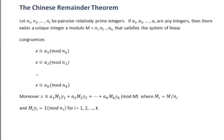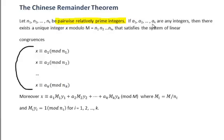Today we're going to learn how to use the Chinese Remainder Theorem to solve a system of linear congruences. First, pause the video and take a few minutes to read the theorem carefully. In order to use the Chinese Remainder Theorem, we have to ensure that our mods are pairwise relatively prime integers, and the values of a1, a2, all the way down to ak can be any integers. If we have those conditions, then we know there's a unique solution to that system.